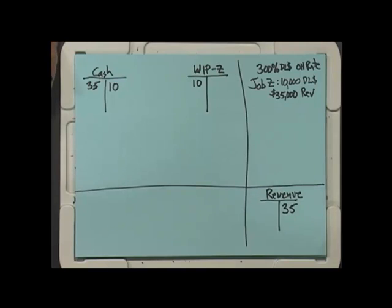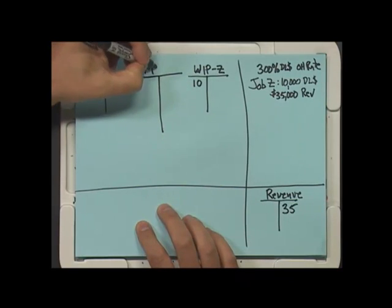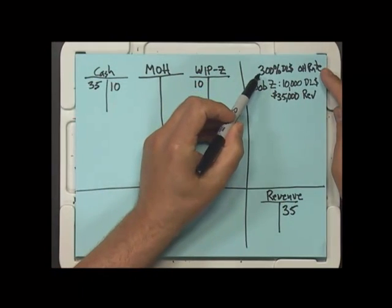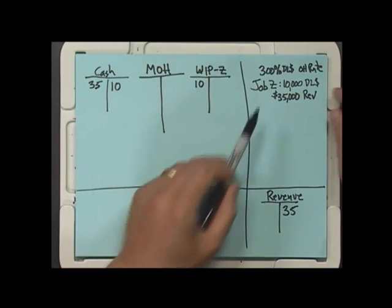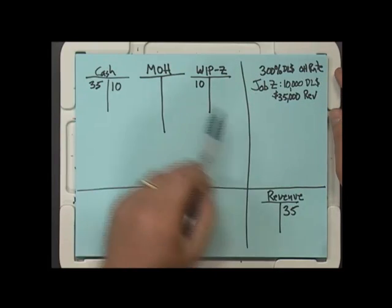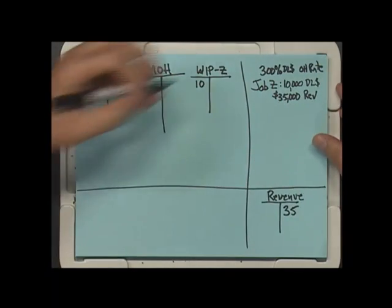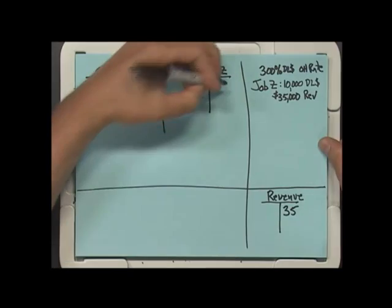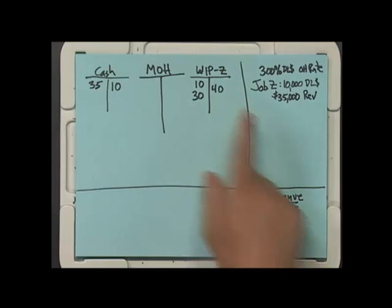Now we need to think about the overhead. Let's create an overhead account here. The first thing we know is how we're going to take the dollars out of overhead and put them into work in process. What are we going to do? We are going to multiply the $10,000 direct labor dollars by 300%. So we're going to add $30,000 of cost to job Z.